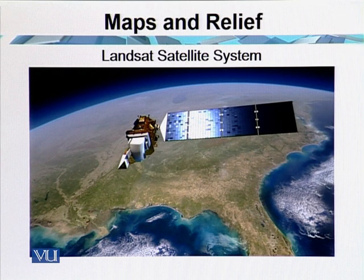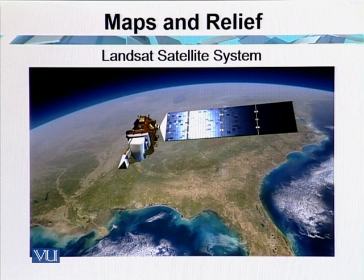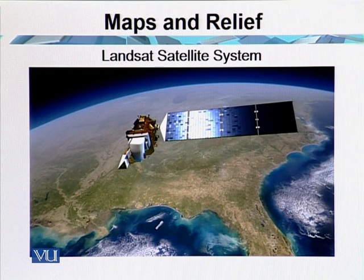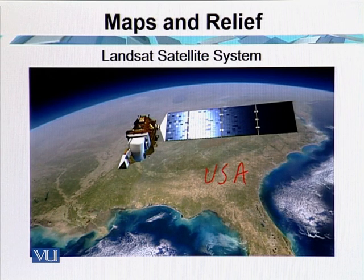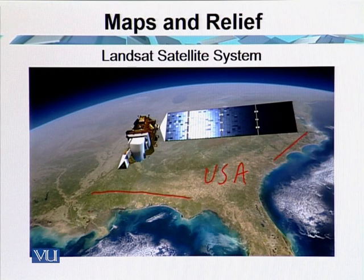This is a map of the USA, and the satellite is taking a picture of the southern part of the USA. This is the southern part and this is the eastern part, the southeastern part of the USA.